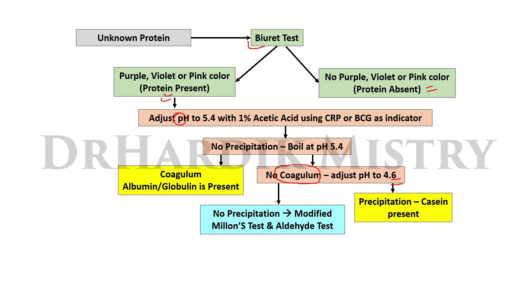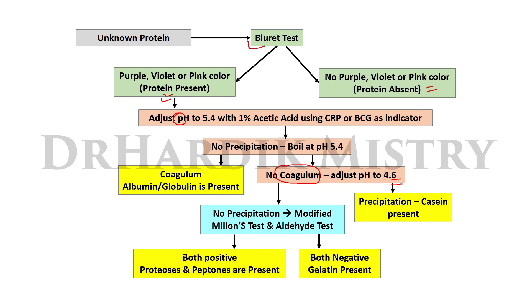If you are not seeing any precipitation at pH 4.6, go for the modified Millon's test and aldehyde test. If both the Millon's and aldehyde tests are positive, proteoses and peptones are present in the solution. If both tests are negative, then gelatin is present in the solution.